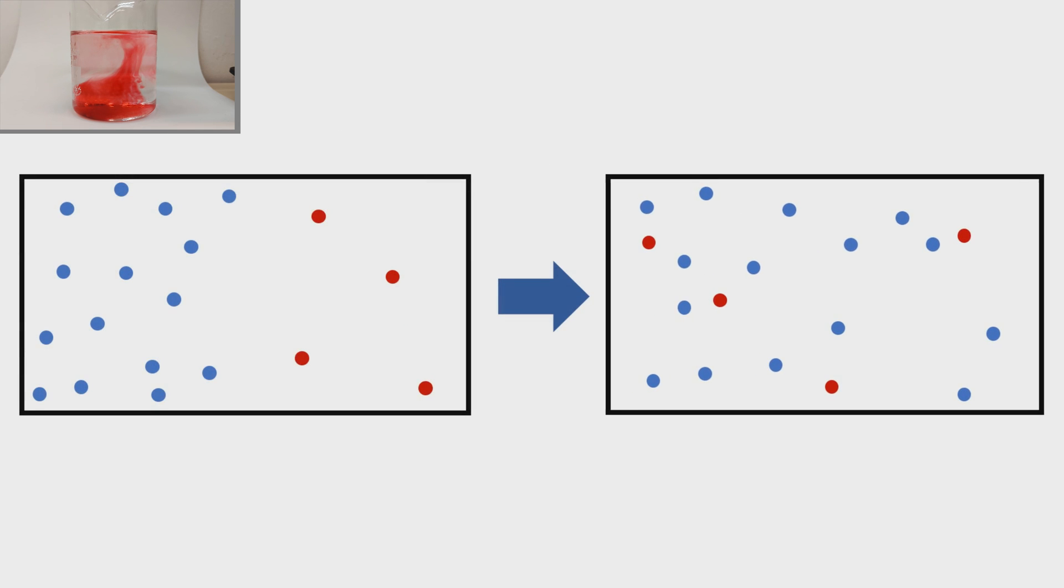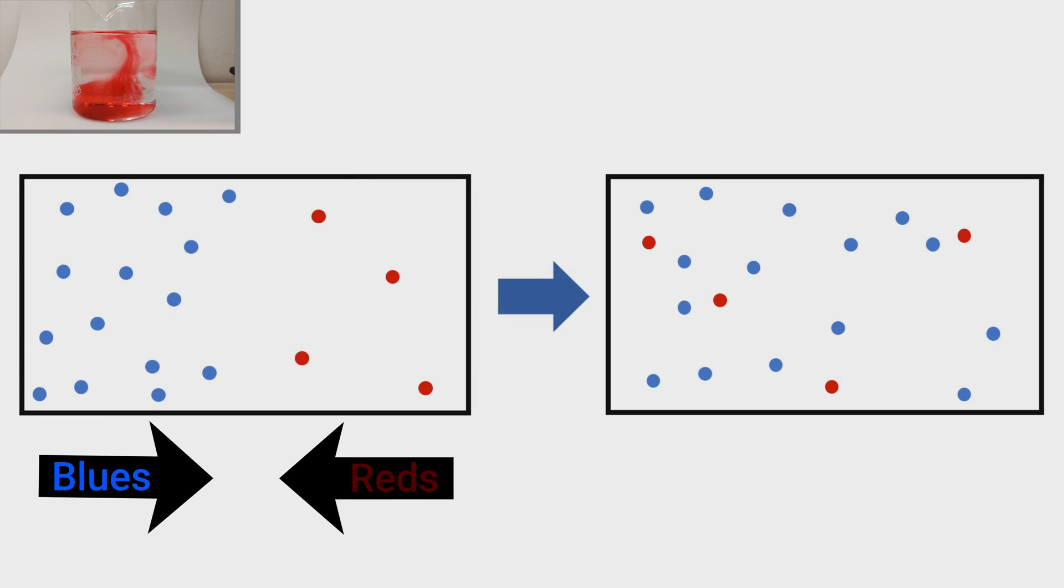So, we started with blue spheres on the left and red spheres on the right, and now the balls are evenly distributed in space. Overall, we had a net flux of blue spheres from left to right and a net flux of red spheres from right to left. There was a flux from regions of high concentration of spheres to regions of lower concentration. This is exactly what happens in diffusion.